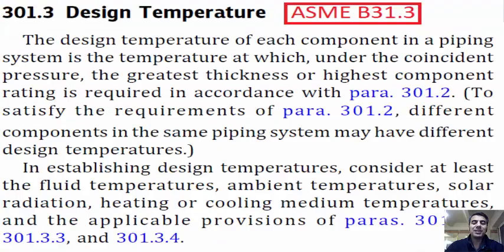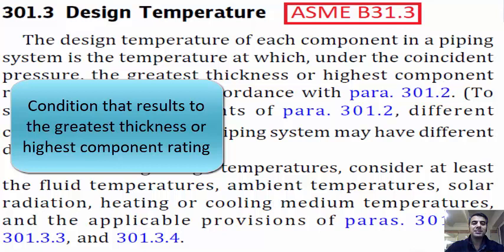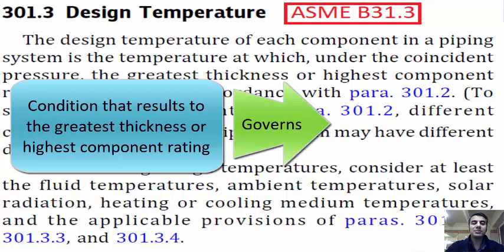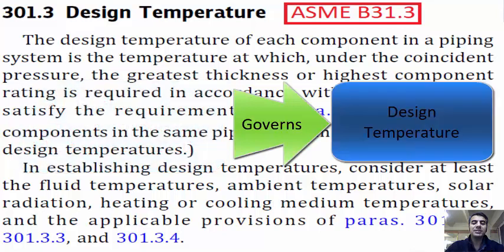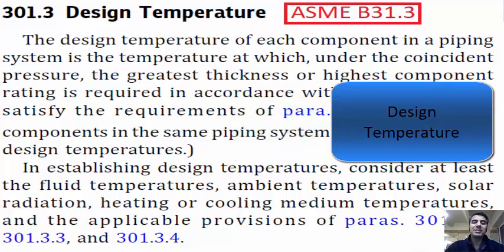Based on paragraph 301.3 of ASME B31.3, the design temperature of each component in a piping system is the temperature at which, under the coincident pressure, the greatest thickness or highest component rating is required in accordance with the code requirement. This definition is the same as design pressure — the condition that results in the greatest thickness or highest component rating will govern the design temperature.